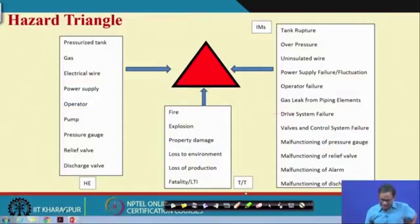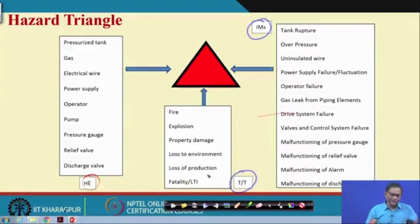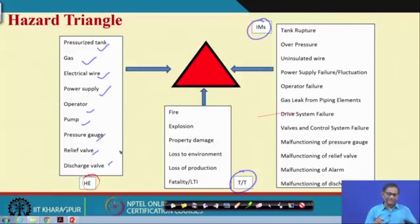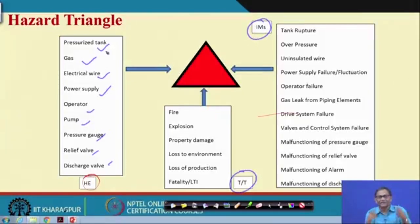Now, the hazard triangle. The elements of the hazard triangle are: hazardous element, initiating mechanism, and target and threat. With reference to this pressure tank: the tank, gas, wire, power supply, operator, pump, gauge, relief valve, and discharge valve — all can be thought of as sources of hazard. They are either hardware or energy sources. When we talk about hazardous elements, they can be hardware, software, humanware, or energy sources. For example, the pressure tank itself is a hazard element because the tank can have wear and tear and finally there can be leakage or rupture.